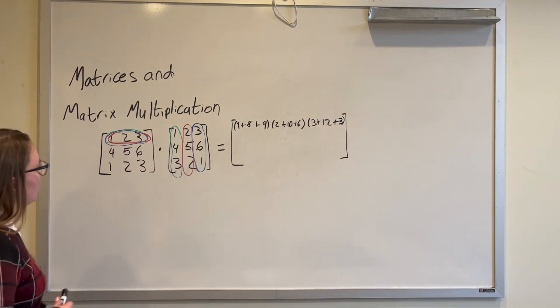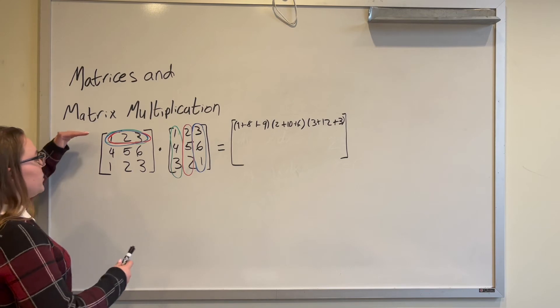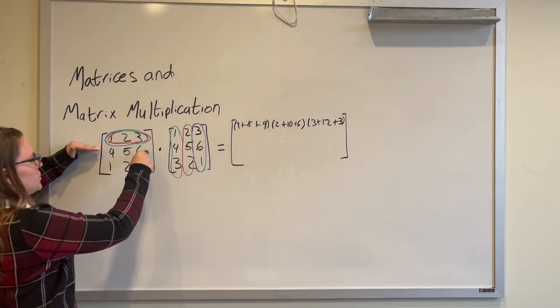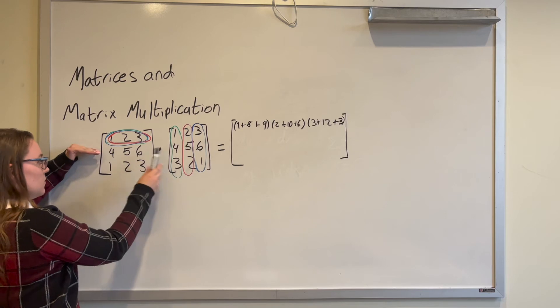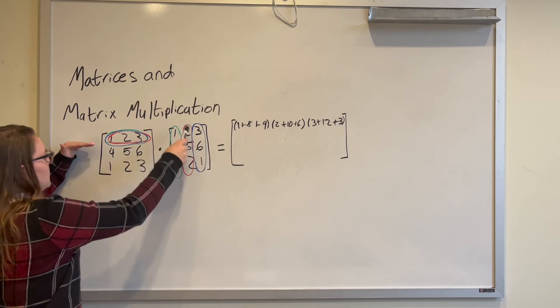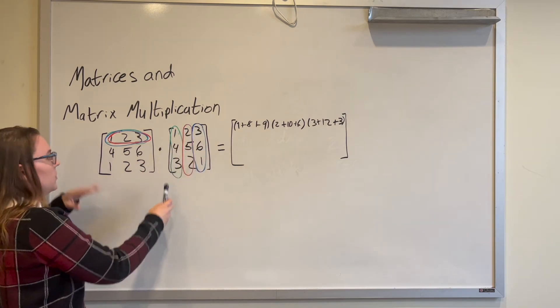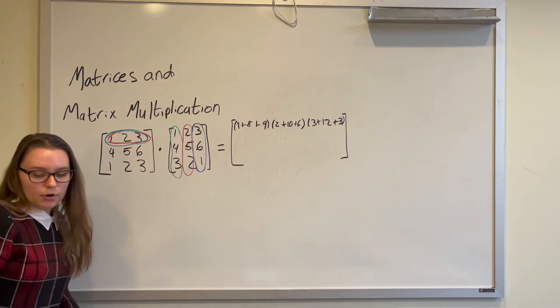Alright, and now that we have those values, we are going to repeat this process, but we are going to move down to this row. And so we are going to multiply this row times this column, and this row times this column, this row times this column, and continue on until we get all of the values of our new matrix.